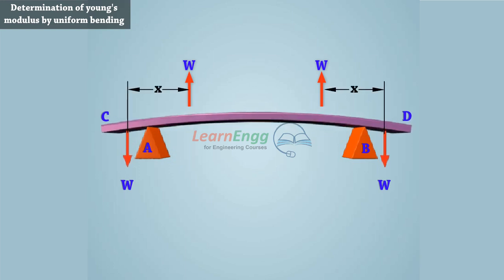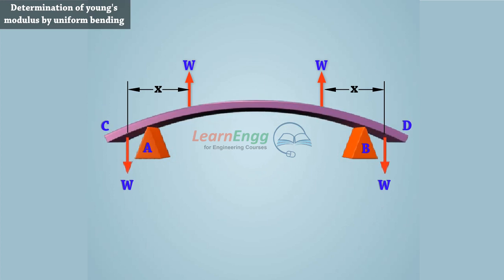Hence, the reaction of the knife edge is equal to W. Now the beam bends uniformly and forms arc of the circle of radius R.